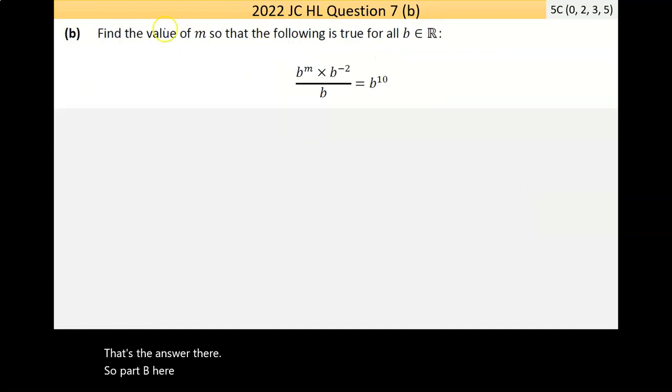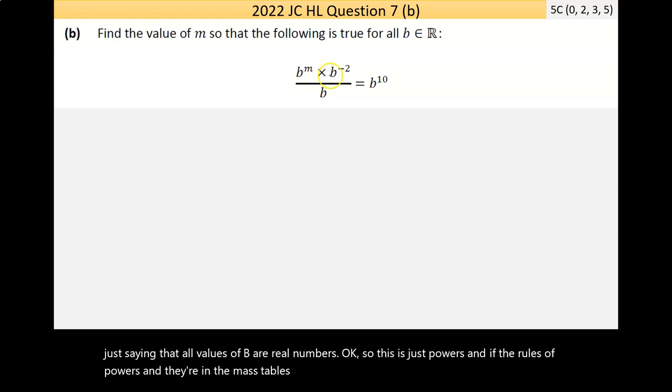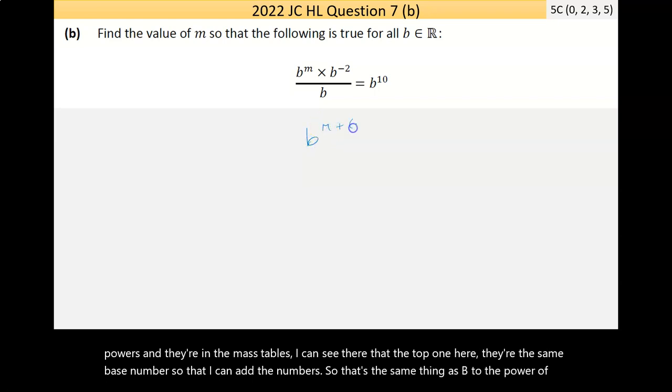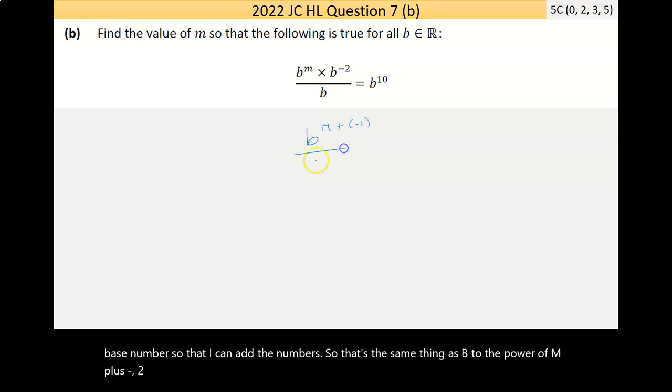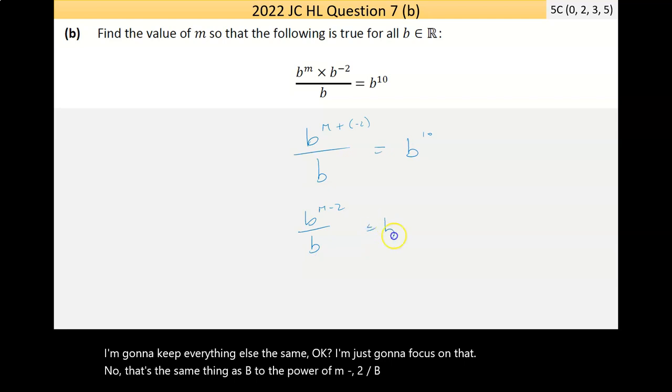So part B here says, find the value of M so that the following is true for all values of B. And it's just saying that all values of B are real numbers. So this is just powers, and if you know the rules of powers, they're in the math tables. I can see there that the top one here, they're the same base number, so I can add the numbers. So that's the same thing as B to the power of M plus negative 2. I'm going to keep everything else the same. Now that's the same thing as B to the power of M minus 2 over B is equal to B to the power of 10.